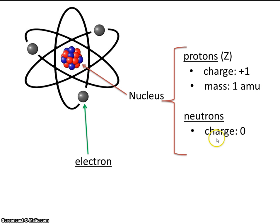The neutron has zero charge. It has no charge at all. It also has a mass of one amu.